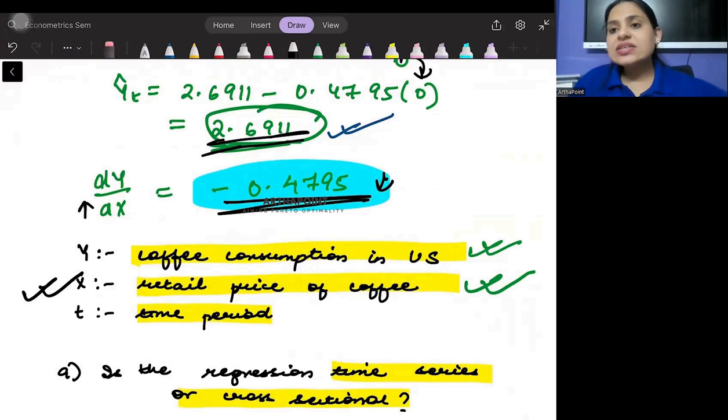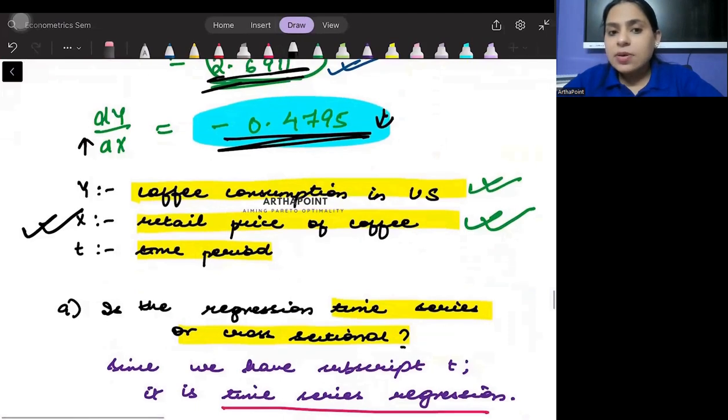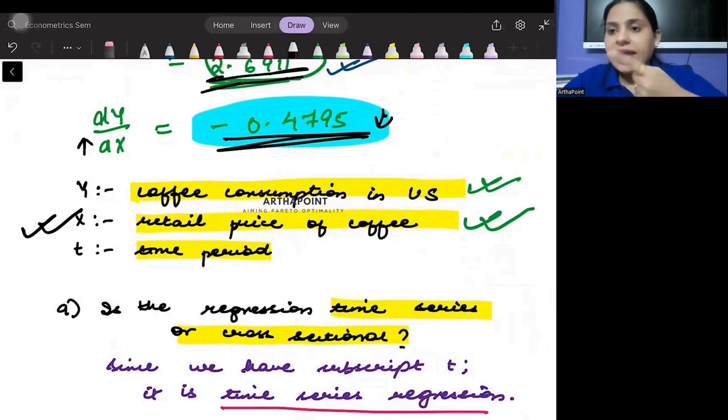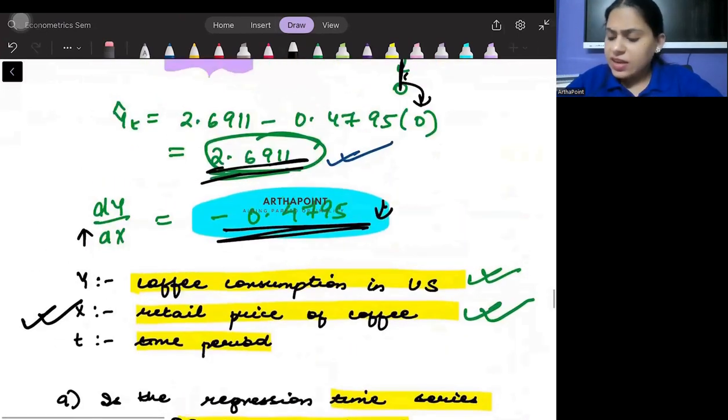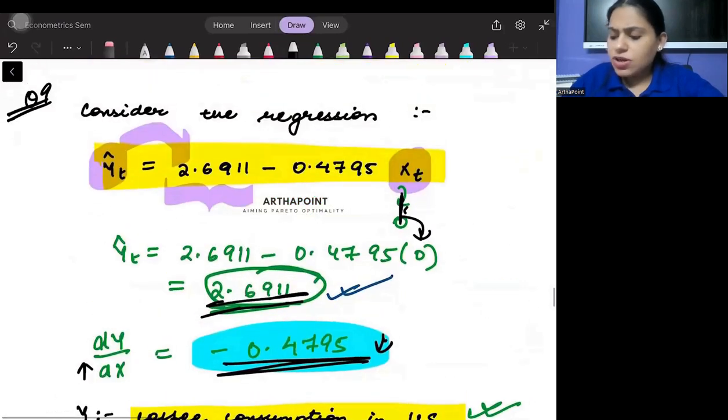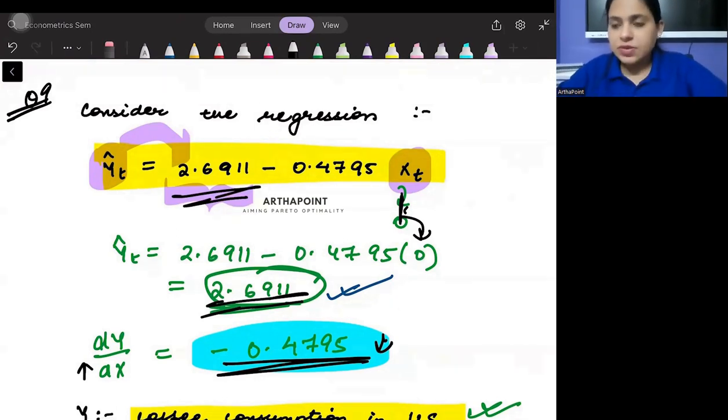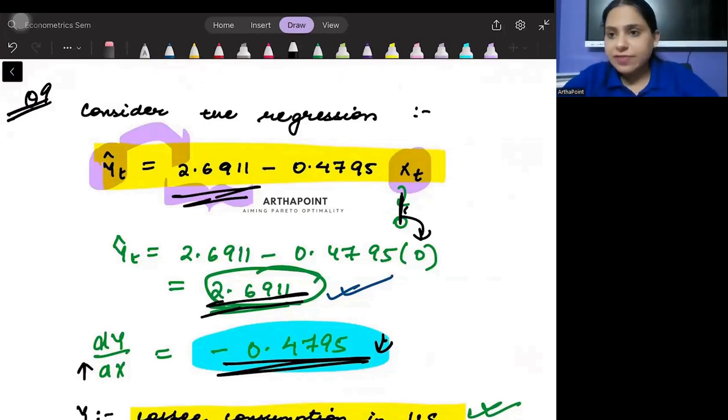So the question is asking: does it make any economic sense or not? The answer is no, it does not. Why? Because coffee is a good traded in the market. Anything traded in the market cannot be available free of cost. If it is free, then why will the consumption be only 2.69 units? If it's free, the consumption should be infinite; the demand should be infinite. Everybody will demand coffee. Anything that is free should have infinite demand.